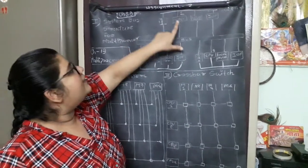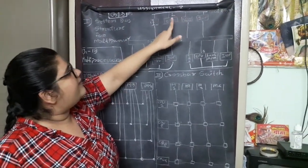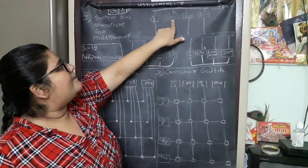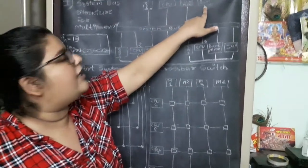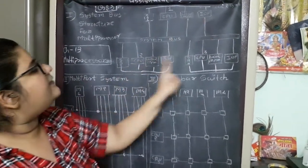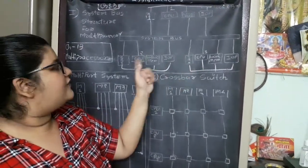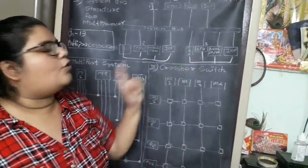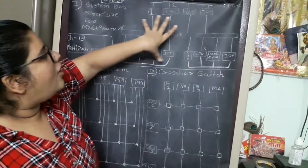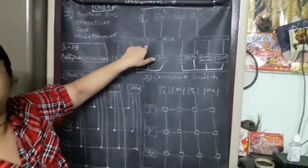What is the role of local bus? To transfer the data from local memory to CPU 1, from CPU 1 to bus controller, from CPU 1 to input-output processor. Similarly, these two CPUs are also connected with a local bus. They all are connected with a common bus, system bus.